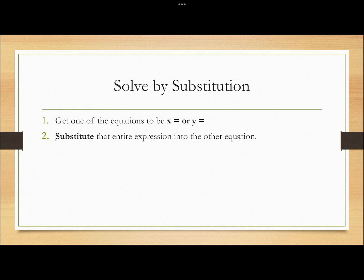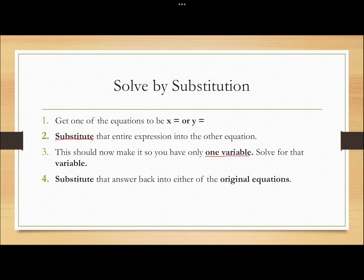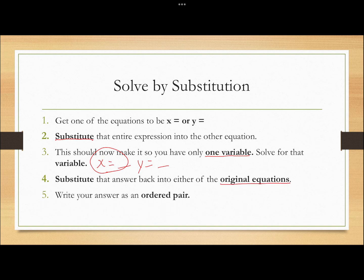Whatever we get in step one, we're going to substitute that entire expression into the equation we did not work with. At that point, you're going to have an equation with one variable, so just solve that equation. When you solve, you'll have either an x equals or a y equals a number. Take that and solve back in for the one you don't know — if you know x, solve for y; if you know y, solve for x. Make sure you use one of your original equations to do that. Finally, write your answer as an ordered pair — if your answers aren't ordered pairs, they won't be counted as correct.